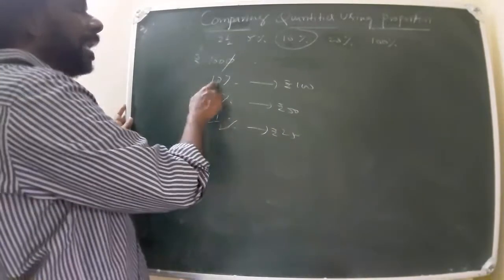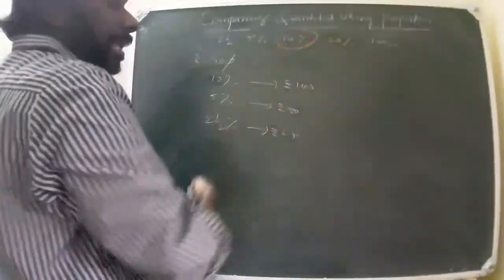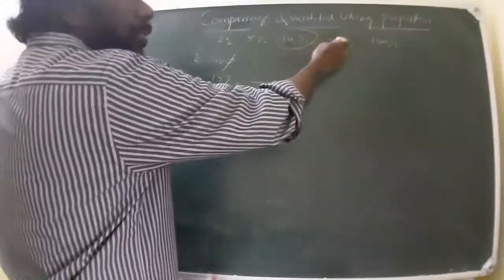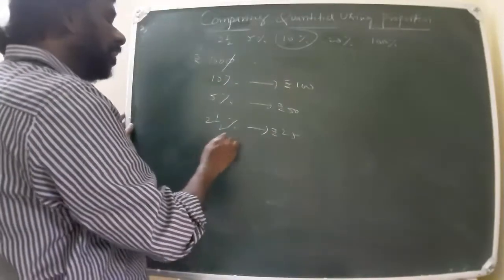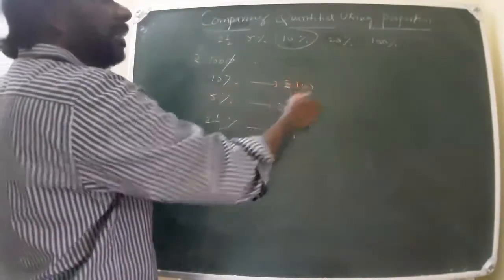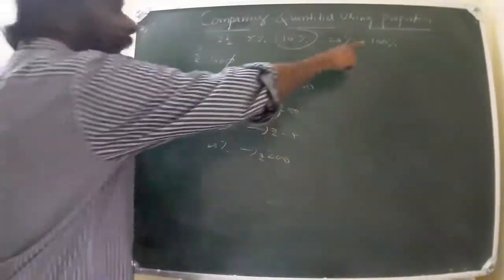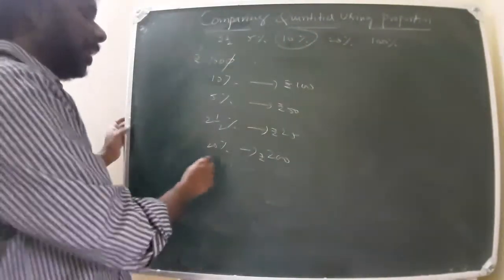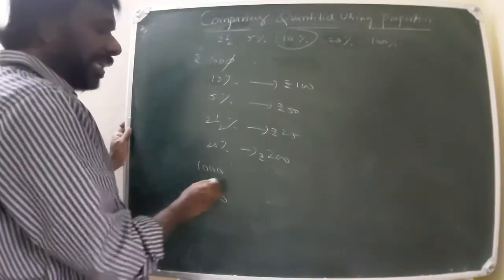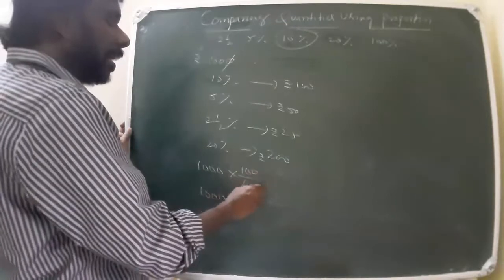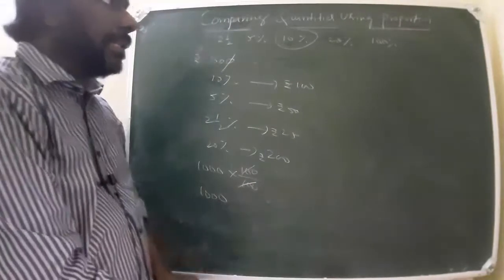For twenty percent, since twenty is two times ten, multiply the ten percent value by two: two into one hundred equals two hundred. And one hundred percent means the full value — one hundred percent of one thousand is one thousand, because one hundred by one hundred cancels and you get one thousand. That is how we do percentages.